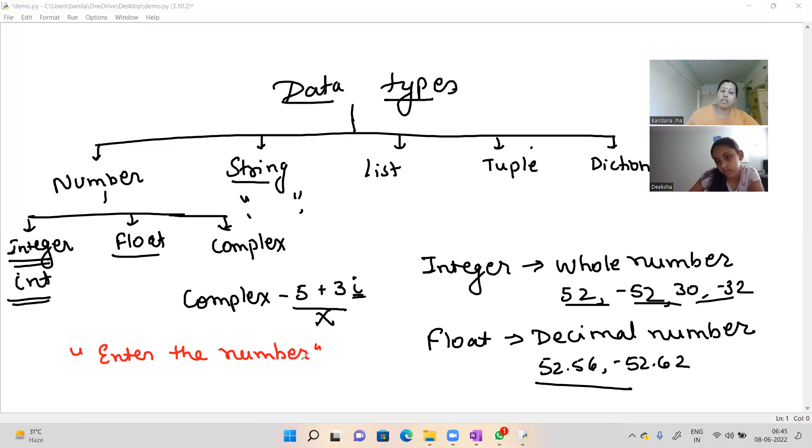Okay? Double inverted codes. This is also a form of string. Whatever thing you will write, that string, the output, the processor will display the same thing as it is. It will not change. I will show you the demo.